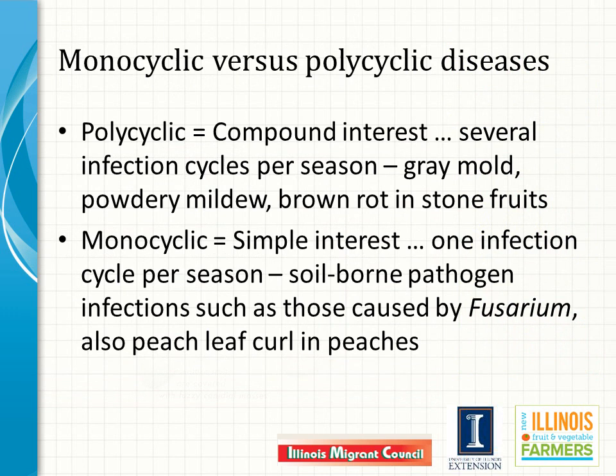Gray mold of strawberries and other crops is called a polycyclic disease. Production of new inoculum — spores, in this case called conidia — on infected tissues can initiate additional infection cycles as the season progresses. Polycyclic diseases, also called compound interest diseases, include gray mold, powdery mildew, brown rot in stone fruits, and many other examples. In contrast, monocyclic diseases cause only one infection cycle per crop season. Examples of monocyclic or simple interest diseases include root or crown infections caused by fungi in the genus Fusarium or other soil-borne pathogens, and peach leaf curl of peaches.